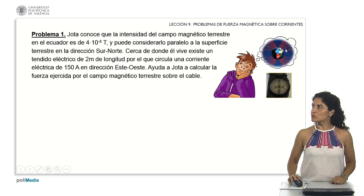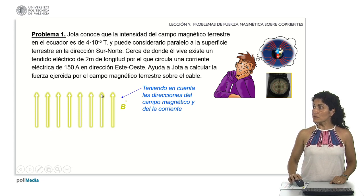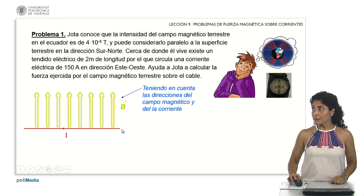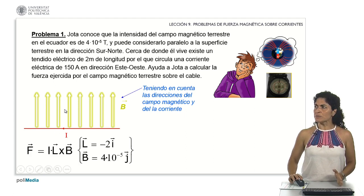Given that we're positioned at a point on the equator, let's concentrate on this geographical location as specified in the statement. Let's consider the orientation of the magnetic field, as mentioned in the statement, along with the alignment of the power line and the current running from east to west. Indeed, it's a straight rectilinear conductor situated within a constant magnetic field, allowing us to employ the simplification discussed in our theoretical overview within lesson number 9.